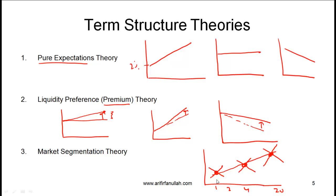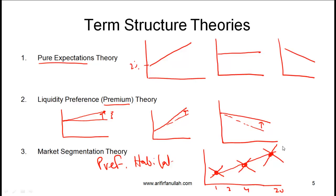The market segmentation theory is not based on expectations but on supply and demand in different segments. A slight variant is the preferred habitat theory, which says that while investors have preferences for certain segments, they can be convinced to move from one segment to another if the rates are good enough. For example, a pension fund that prefers the 20-year segment might be willing to invest in the 21-year segment if the rate there is significantly better.